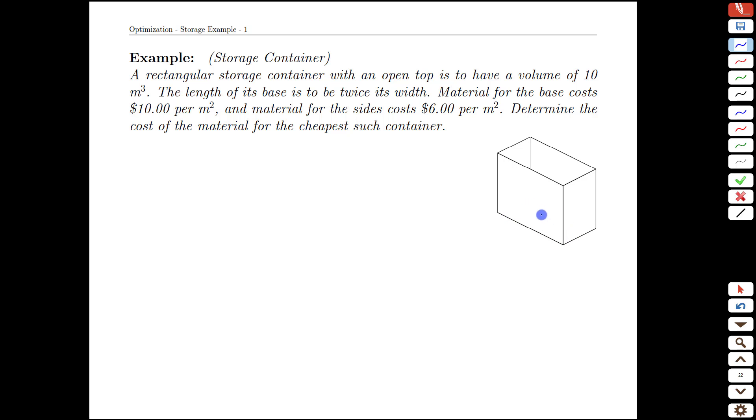There's no lid, but there is a base down here. We have a target volume. In other words, we want to build a box of a certain size, 10 cubic meters, which is quite large. The length of its base has to be twice its width. That'll be an important constraint.